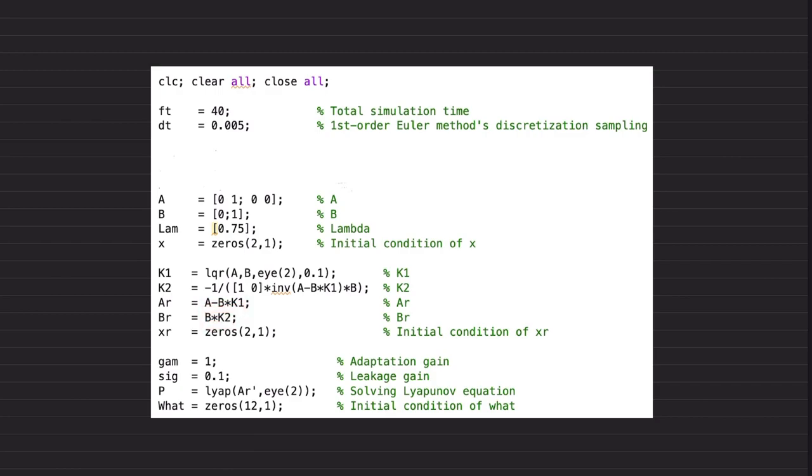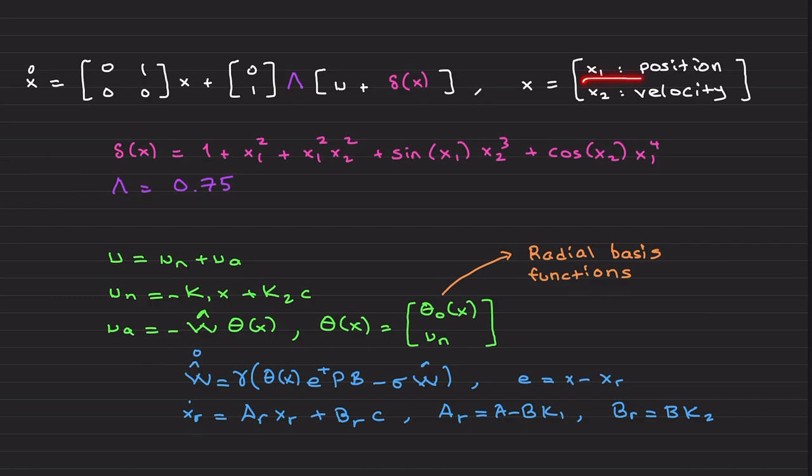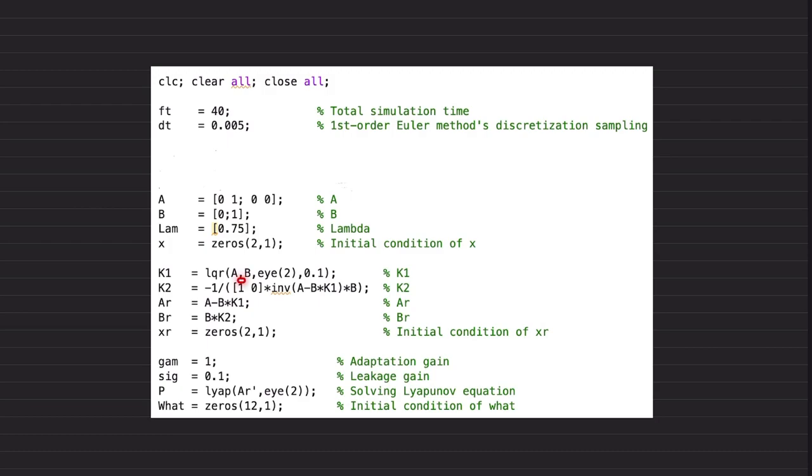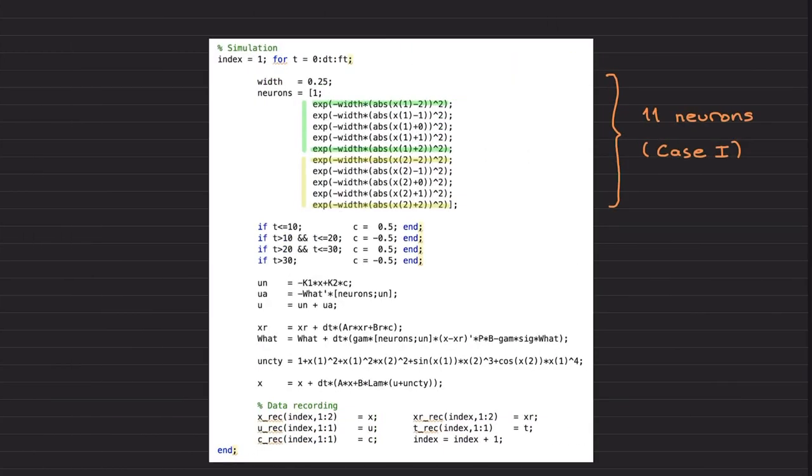Similar to the previous videos, if you call X is the position, X2 is the velocity, I am choosing my C matrix here as one zero. I am interested to command to follow the position or X1. This is the adaptation gain, this is a sigma modification leakage gain. This is the solving the Lyapunov equation. In the previous MATLAB video I mentioned why we include transpose here. Initialization for w hat.